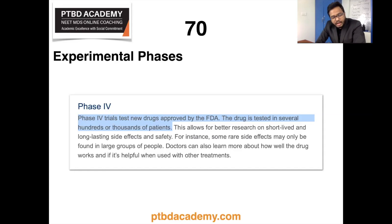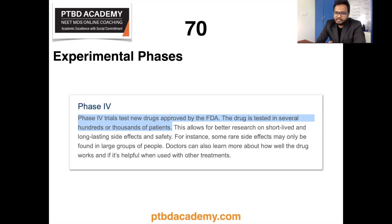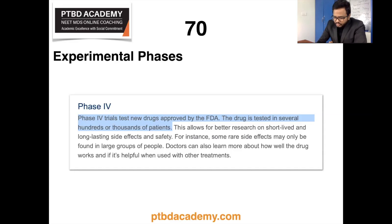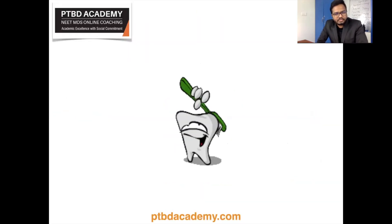Phase 3 involves 100 patients or more, comparing a new drug to the standard of care, assessing side effects of each drug and which works better. Phase 4 tests new drugs or experiments approved by the FDA, tested in several hundreds of thousands of patients. These are the key topics highlighted in this video.